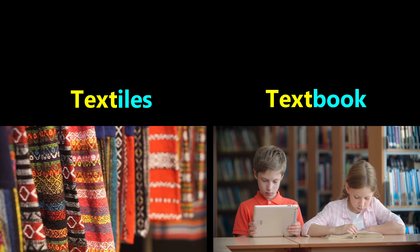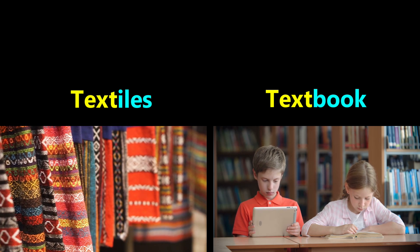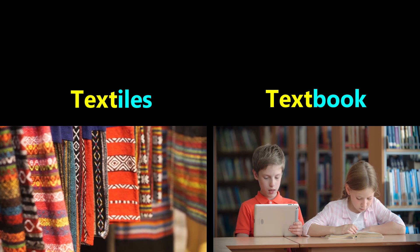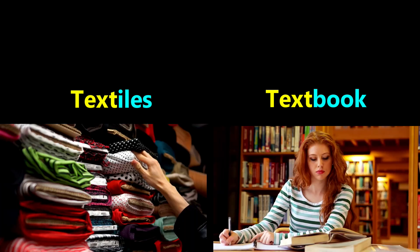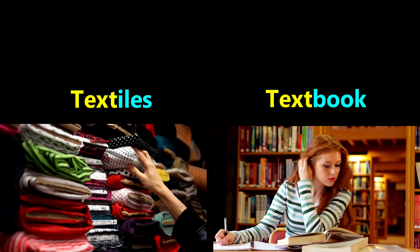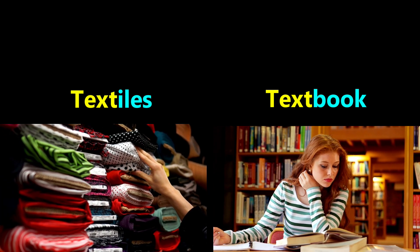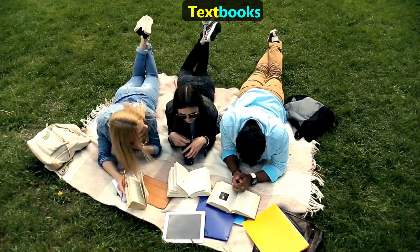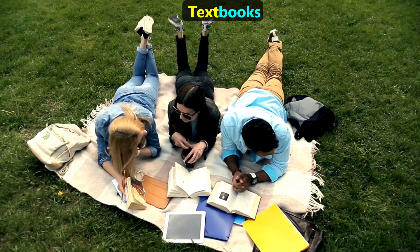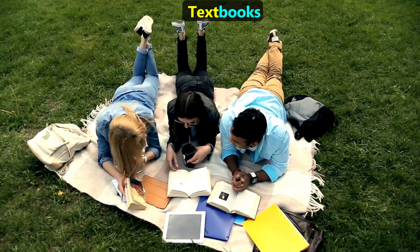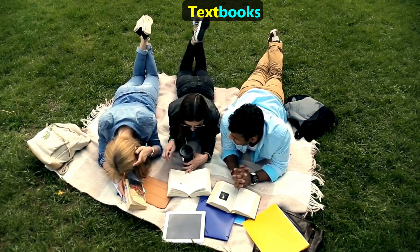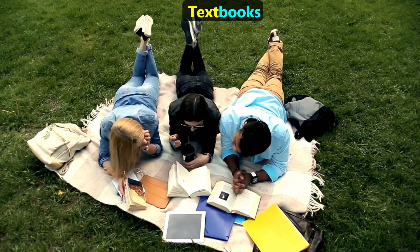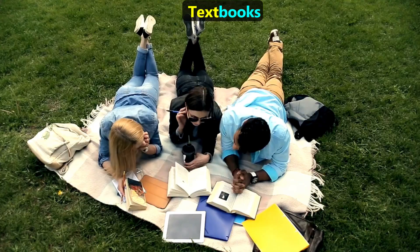The word 'textile' is a general word that refers to cloth and contains the word 'text.' Likewise, the word 'text' can mean words, such as when used in the word 'textbook.' A textbook is made of mostly words and has relatively few pictures. We use a textbook when learning about a subject in school.